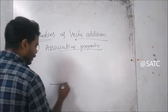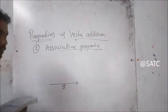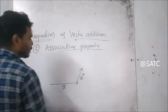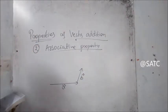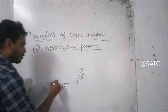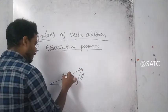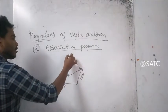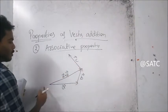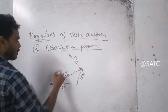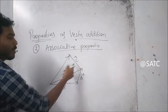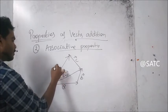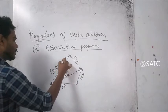Consider a vector A, another vector B. This is vector A plus vector B. So there is another vector C, and this vector starts here. So this is vector A plus vector B plus vector C.